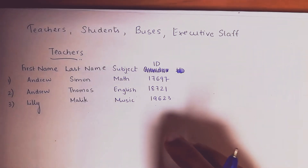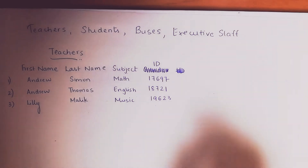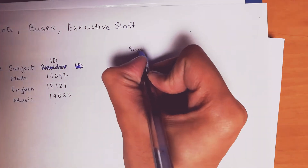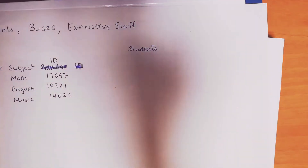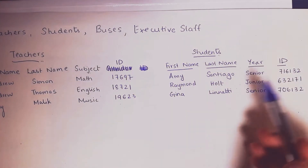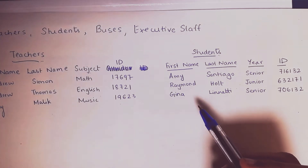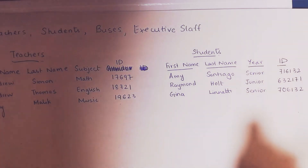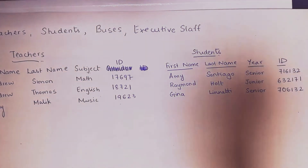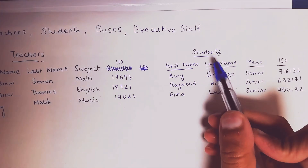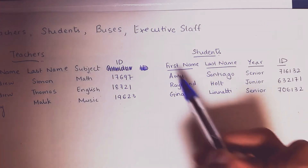Now we have teachers, but teachers aren't the only ones in school — teachers have to teach someone. That's going to be students. So let's have a table for students. I have created a database for students. We have a list of students, and if you find these names familiar, yes, that's because I've watched Brooklyn Nine-Nine. So back to database modeling.